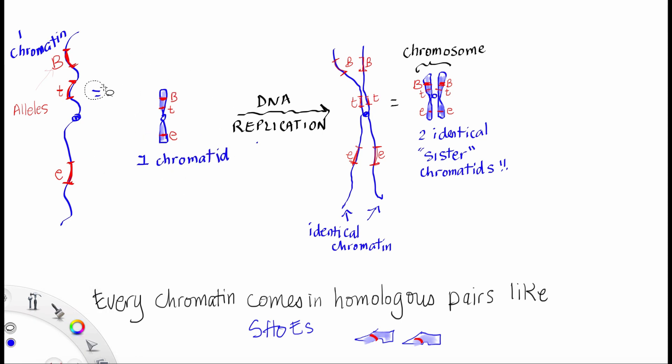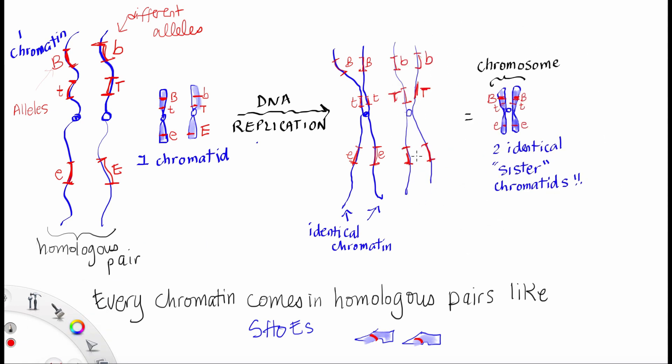Now every chromatin comes in homologous pairs. So there's the homologous pair of the chromatin, which means the chromatid also has a homologous pair. Now after DNA replication, the chromatid makes an identical sister chromatid, but then its homologous pair also makes an identical sister chromatid. So we actually end up having homologous chromosomes. Take a moment to know the difference between sister chromatids and homologous chromosomes.